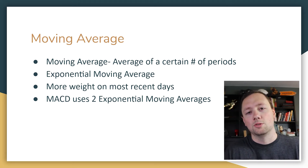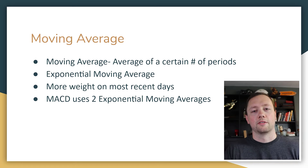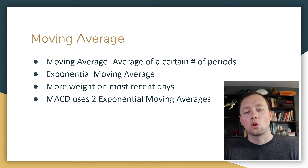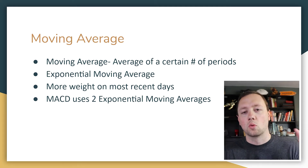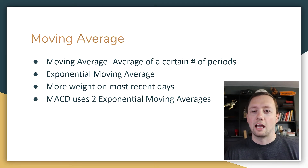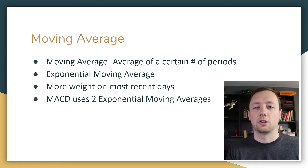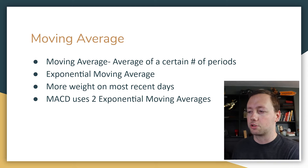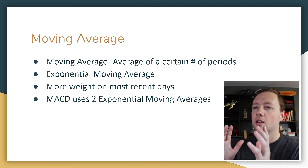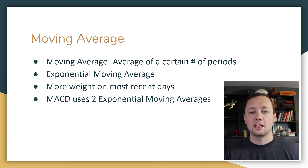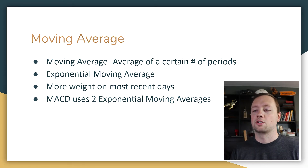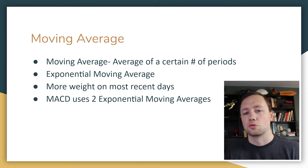Now with the MACD, we use something called an exponential moving average. All it means is that we put more weight on the most recent days. So if we did a five-day exponential moving average, the last day would have a little bit more weight than the first day, giving us a more accurate picture of what's going on right now. The moving average is averaged across a certain period of days, more heavily weighted on the most recent days.